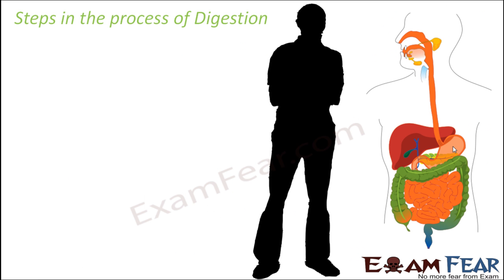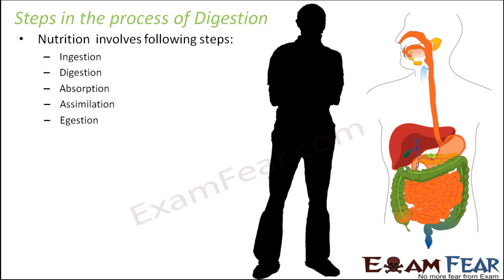Now let us talk about the process of digestion. Digestion is a multi-step process — it does not happen in just one single step. The process involves the following basic steps: ingestion, digestion, absorption, assimilation, and egestion. All these steps together form the process of nutrition.